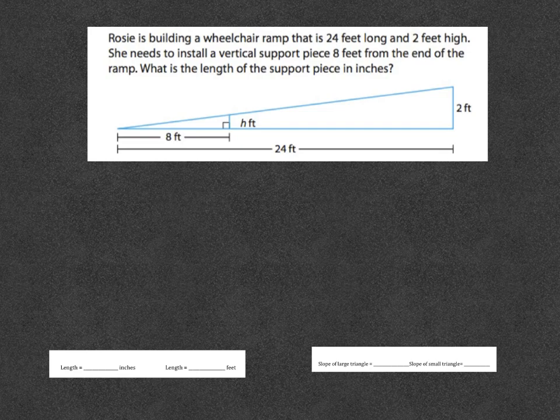Here's the first one we're going to check out. So it says Rosie is building a wheelchair ramp that's 24 feet long and 2 feet high. So the whole entire ramp is 24 feet, and then the height at the end of the ramp is 2 feet. So now I already know the slope of the whole entire ramp, because the rise is 2, and the run is 24.